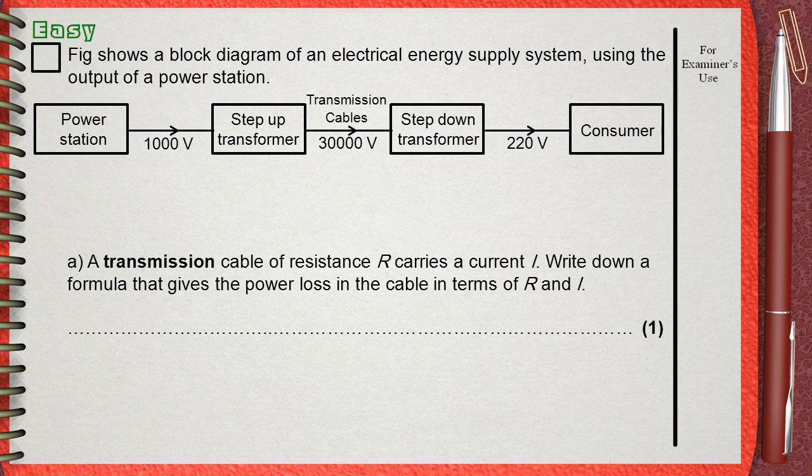These 30,000 volts move in the transmission cables to a step-down transformer. The step-down transformer takes the 30,000 volts and produces 220 volts. And this is what reaches the consumer.